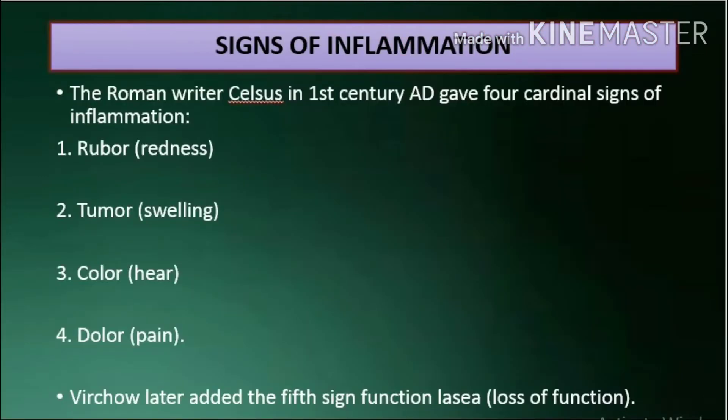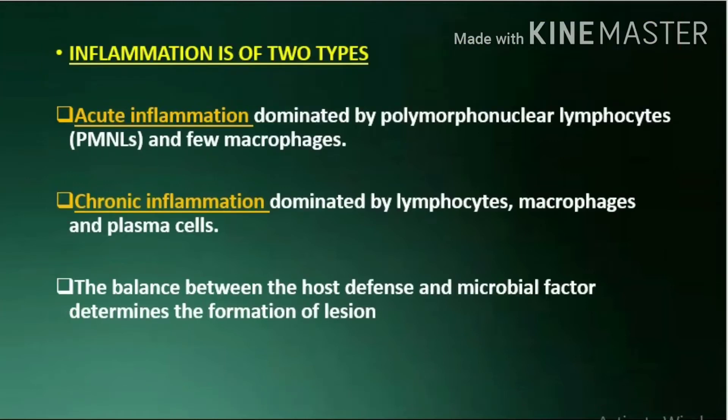Signs of inflammation: the Roman writer Celsus in the 1st century AD gave four cardinal signs of inflammation — Rubor (redness), Tumor (swelling), Calor (heat), and Dolor (pain). Virchow later added the fifth sign, Functio Laesa, meaning loss of function.